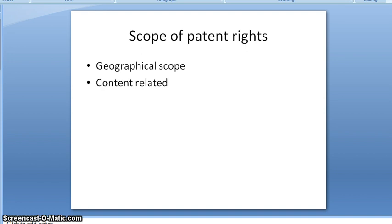Geographical scope means that a patent holder can transfer the license only within the territorial body through which the patent was granted. So that is the geographical scope. For content-related patent rights: the right means that the patent holder can prevent unauthorized persons from making or using the invention. Every word in the patent claim statement is very important.